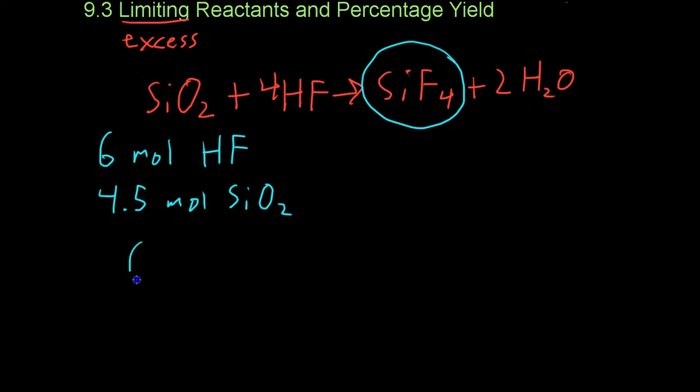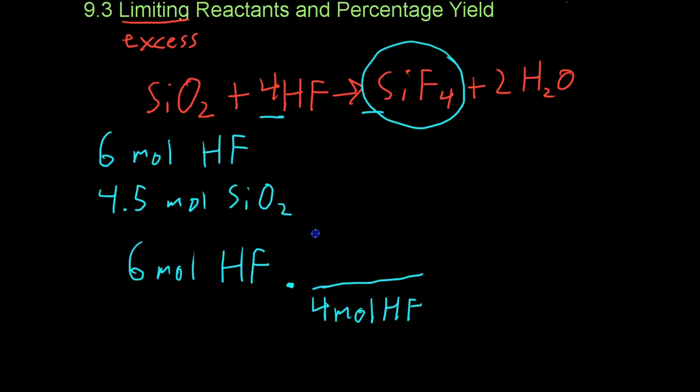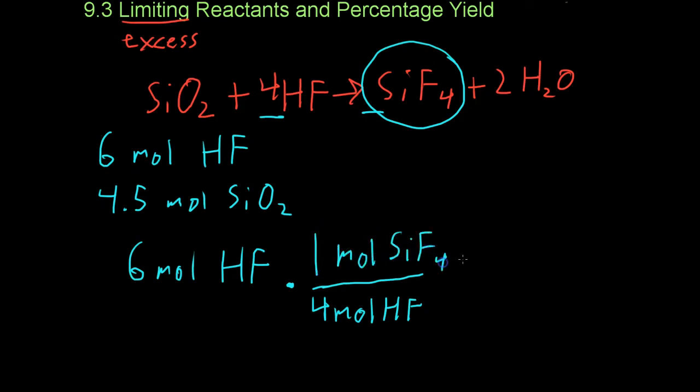With the 6 moles of hydrofluoric acid, you use a mole ratio to determine how much silicon tetrafluoride would be made by using the ratio of the coefficients of the two compounds. For each 4 moles of hydrofluoric acid, you make 1 mole of silicon tetrafluoride, which means that with 6 moles of hydrofluoric acid, you can make 1.5 moles of silicon tetrafluoride.